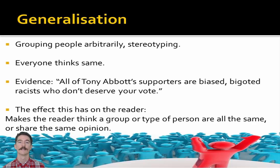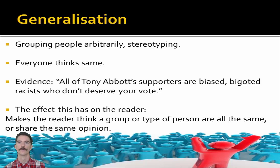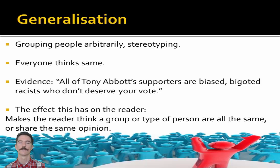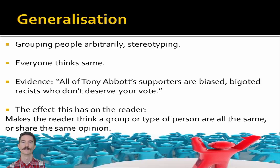Generalization. This is grouping people arbitrarily or stereotyping them based on one characteristic — say, 'all women believe...' or 'all gay males believe...' In three words: everyone thinks same. For example, 'All of Tony Abbott's supporters are biased, bigoted racists who don't deserve your vote.' The effect is it makes people believe that everyone who is not them is one amorphous, homogenous group — they're all the same.